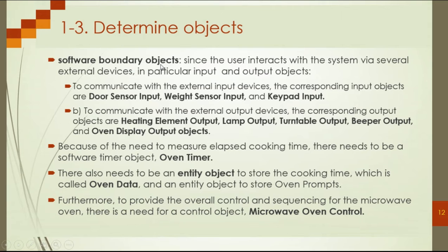In this system, the boundary objects are related to the external devices. The devices we have are: a sensor to detect whether the door is open or not, another sensor to check the weight, and a keypad input to enter the data. For each input device we should have an external input object, which communicates with an external output device.